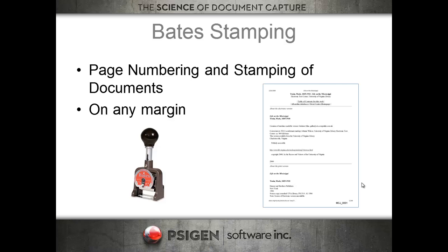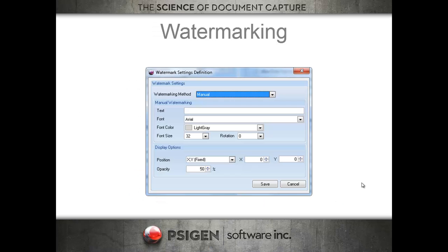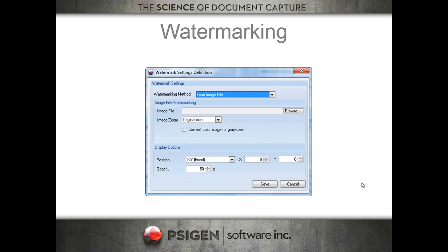Bate stamping and page numbering is a very powerful engine included in the core functionality of SciCapture. It lets you stamp page numbers as well as custom stamps on any border of the document. We can also do watermarking — manual watermarking with text, and we even have the capability to link to an image file. So if you have a county that wants to put the county seal on every document, or a government entity that wants to stamp 'confidential' or 'draft' onto docs, we can do that easily.